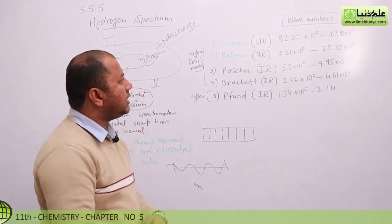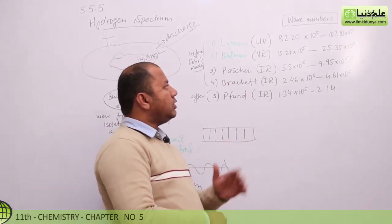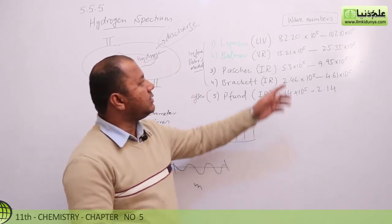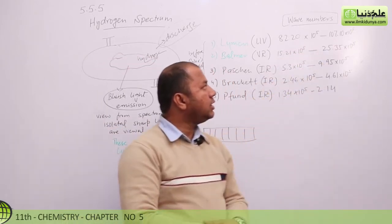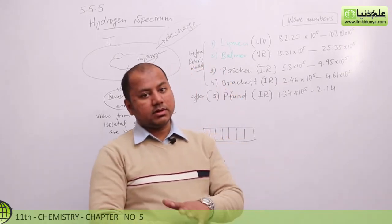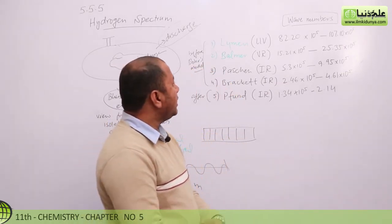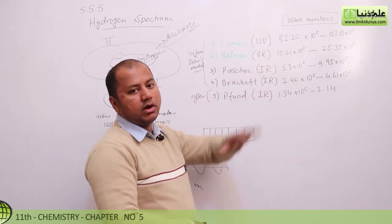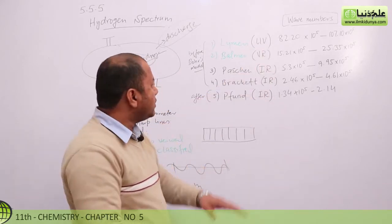Lehman has seen that 82.20 into 10 raise the power of 5. This is Lehman's series and they are coming from the wavelength of ultraviolet region. Okay.